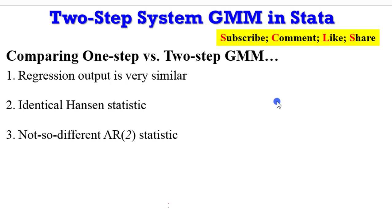So in comparing the results from one step and two step GMM you will observe that your regression output is very similar. You have identical Hansen statistic in most cases. That is what I observed in my own. So check out whether you have the same thing. And the AR2 statistics too are not so different from one another using the two different estimation procedure. So it may be one wondering. So which one can I use? The one step system or the two step system? It depends. You can run the two simulations and choose the one that gives you the best results.